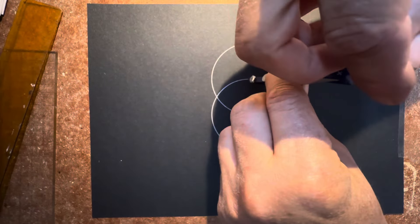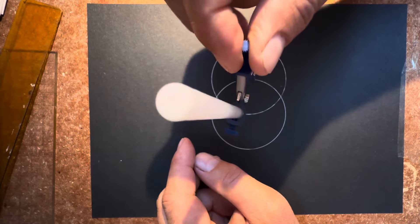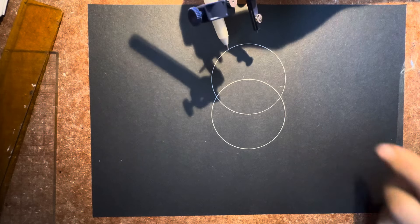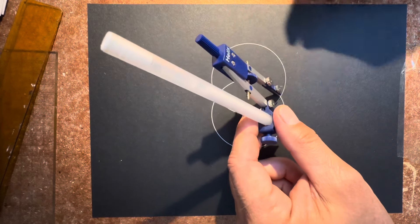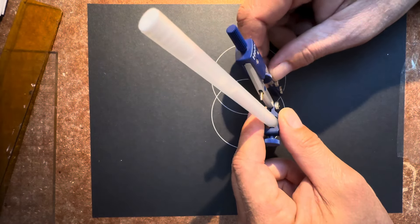This will make the vesica piscis, which is what a lot of people used to think was like the fish shape. Once you have this, you're then looking to find the connecting point between the two lines and put your compass point directly in the line.